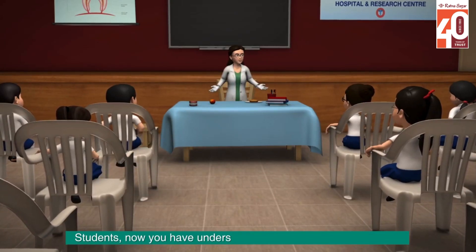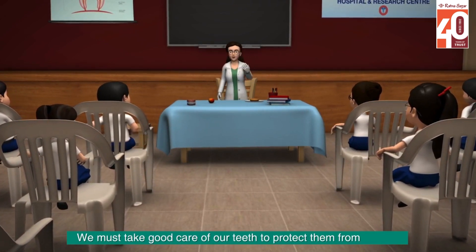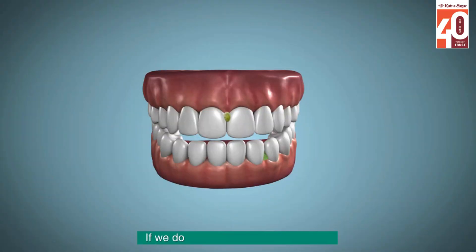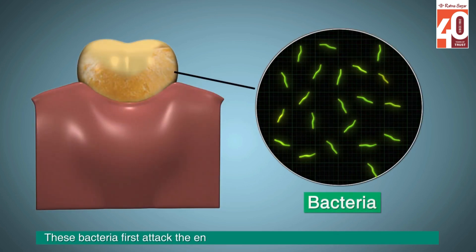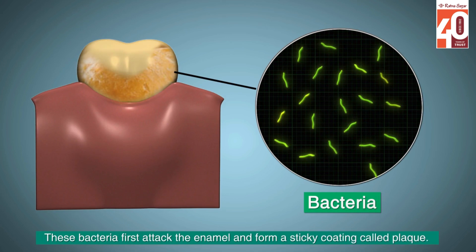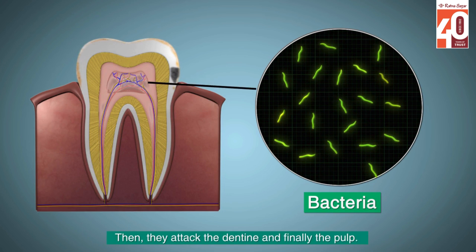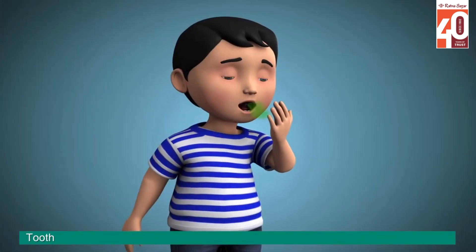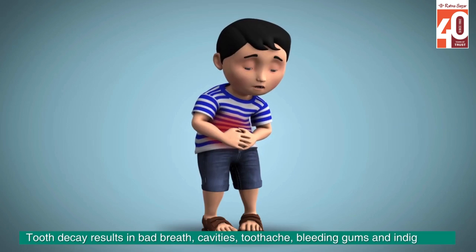Students, now you have understood how important our teeth are. We must take good care of our teeth to protect them from decay, otherwise we will not be able to eat our favorite food. If we do not brush our teeth properly, bits of food will remain stuck to them and cause the growth of bacteria. These bacteria first attack the enamel and form a sticky coating called plaque. Then they attack the dentine and finally the pulp. When the bacteria reach the nerves within the pulp, they cause pain. Tooth decay results in bad breath, cavities, toothache, bleeding gums, and indigestion.